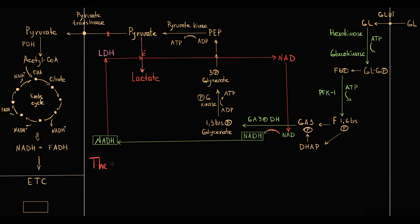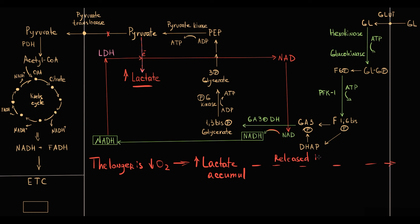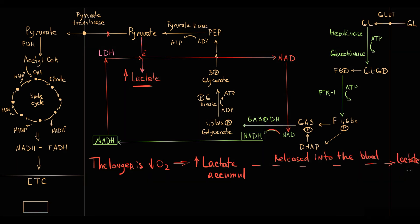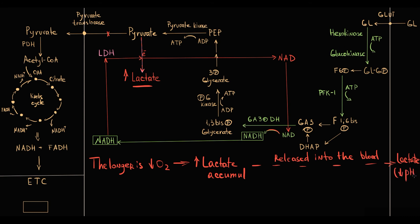The longer the period of oxygen deficiency, the more lactate molecules accumulate. When these lactate molecules are released into the blood, this causes an increase in blood lactate level. Because lactic acid is an acid, lactate causes a decrease in blood pH — a condition known as lactic acidosis.